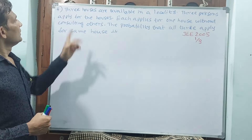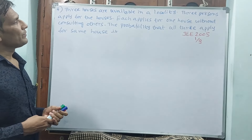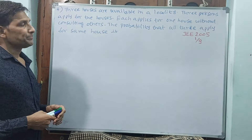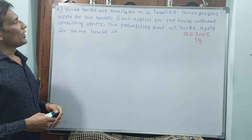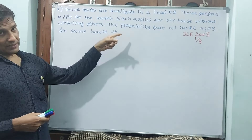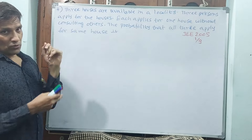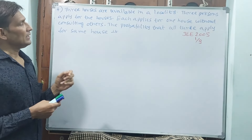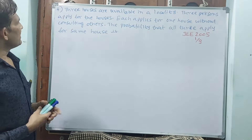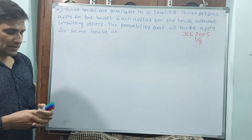See question number four. Three houses are available in a locality. Three persons apply for the houses. Each applies for one house without consulting the others. That means among them they don't know who is applying for which house. The probability that all three persons apply for the same house — how much is that?